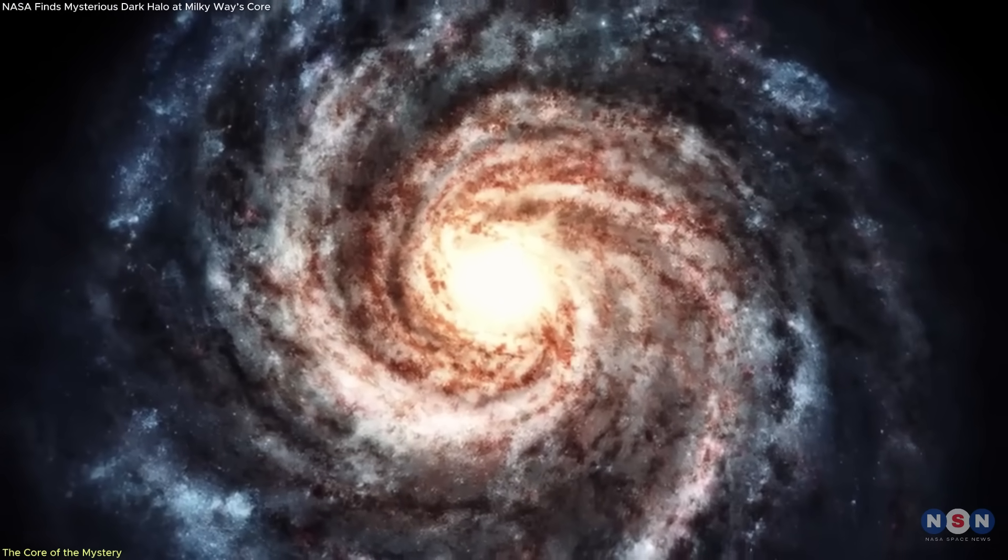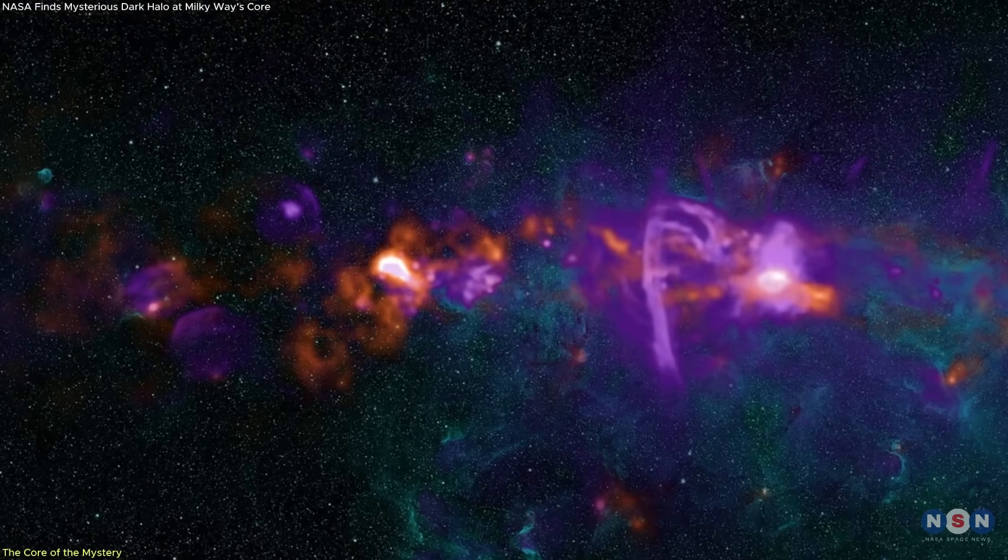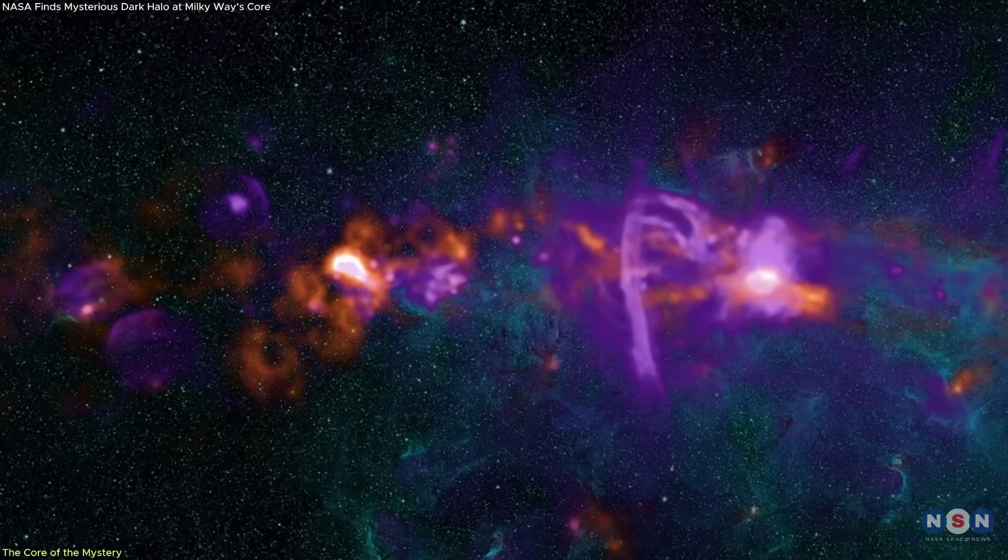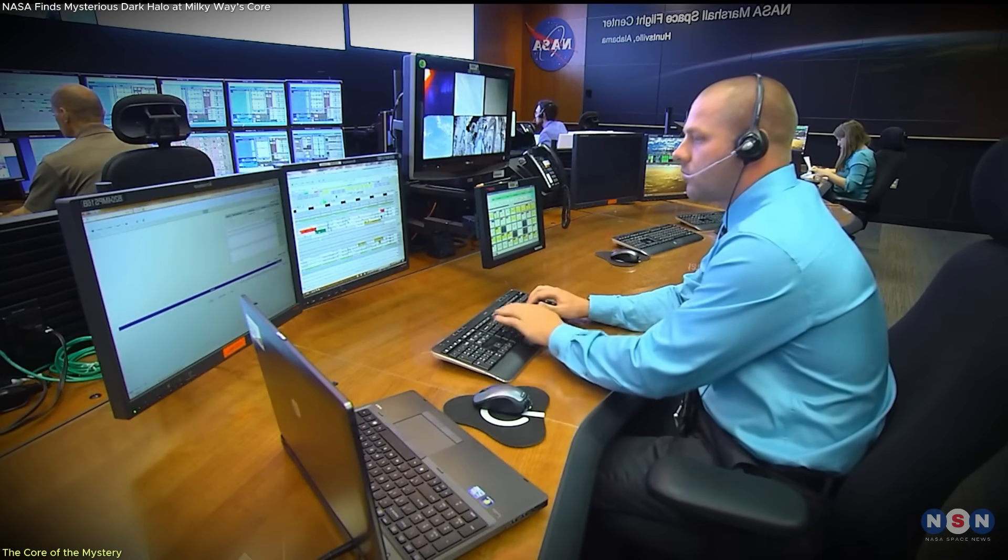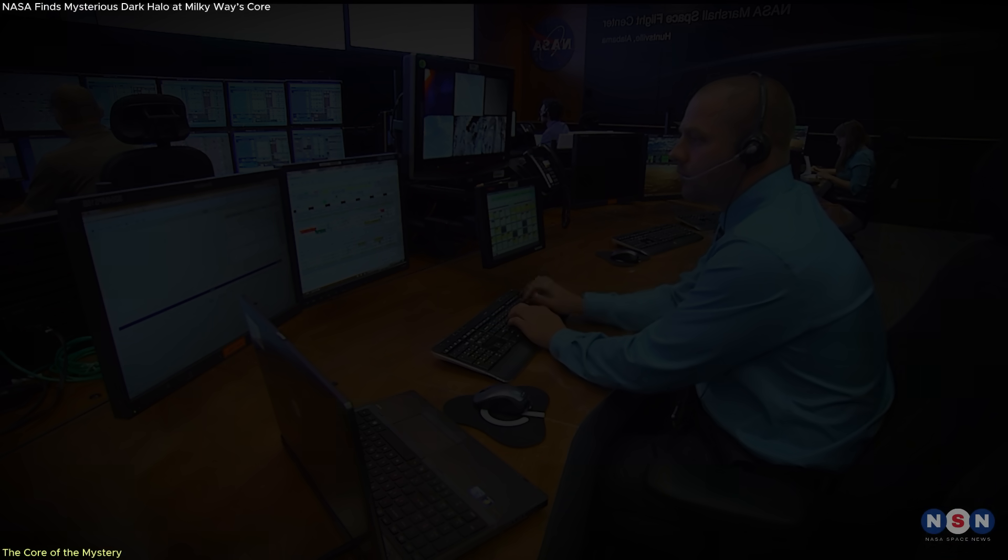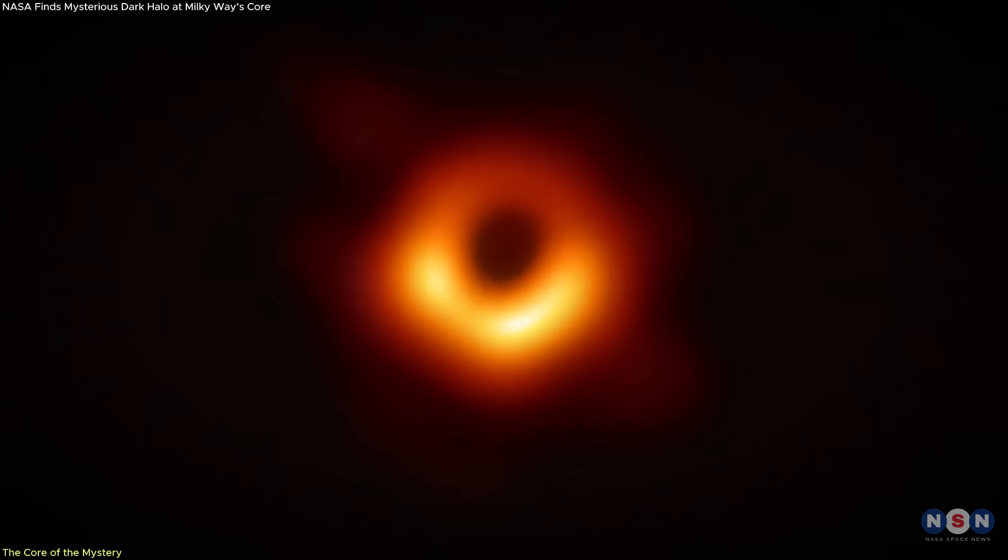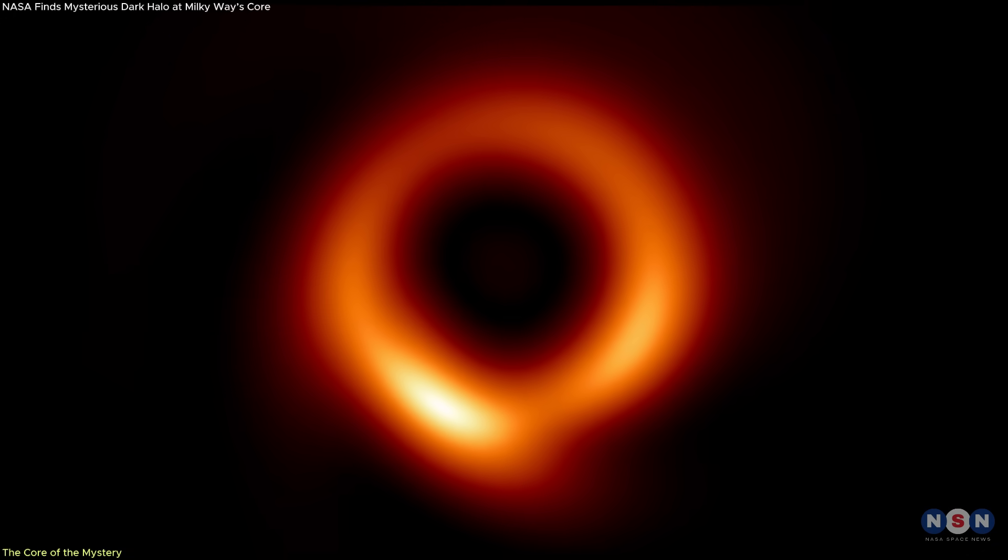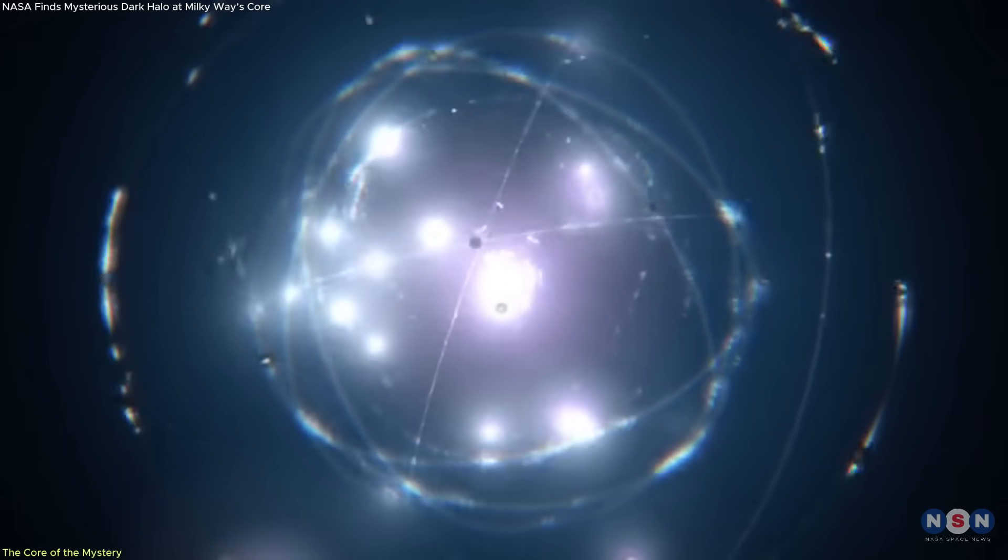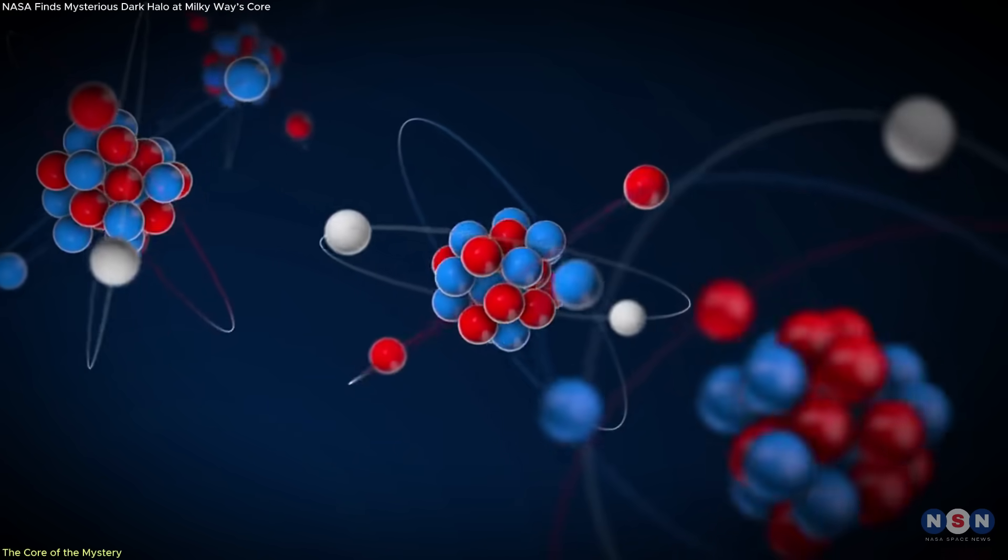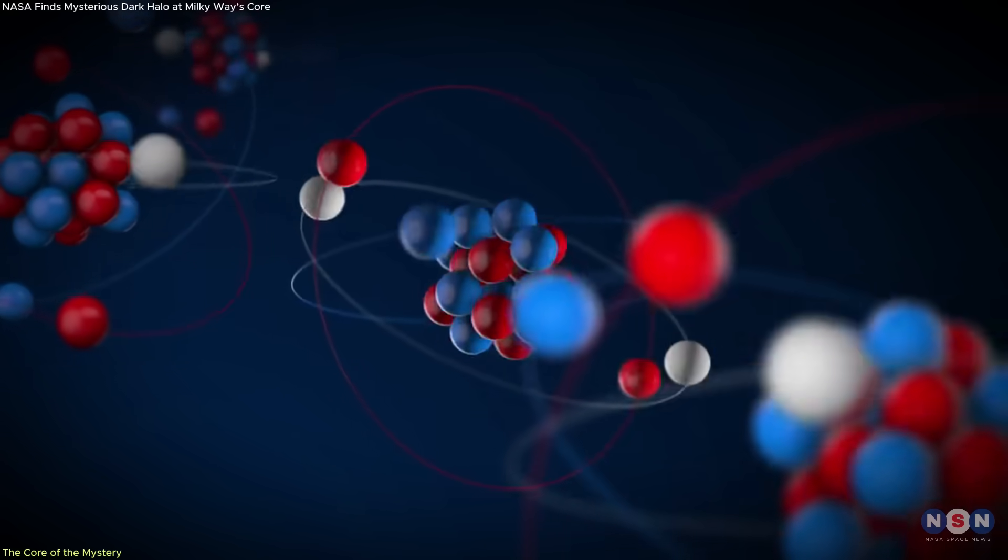At the center of the Milky Way lies the central molecular zone, a dense region filled with gas clouds, radiation, and stellar activity. Astronomers have studied this region for decades, mainly due to its proximity to Sagittarius A-star, the Milky Way's supermassive black hole. But recent observations, specifically targeting hydrogen gas behavior, revealed something new. Scientists detected unusually high levels of ionized hydrogen across large sections of the CMZ.